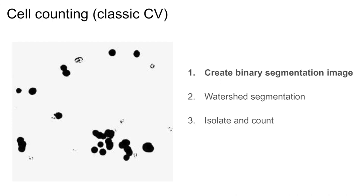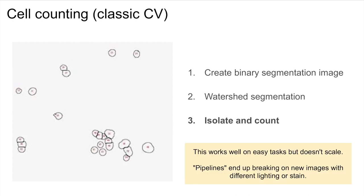Then, some processing will fill in the objects to make more clear circles. Then, a watershed algorithm based on the circular nature of cells is used to separate cells which are grouped together. And finally, each unique segmented area is considered a cell and counted.